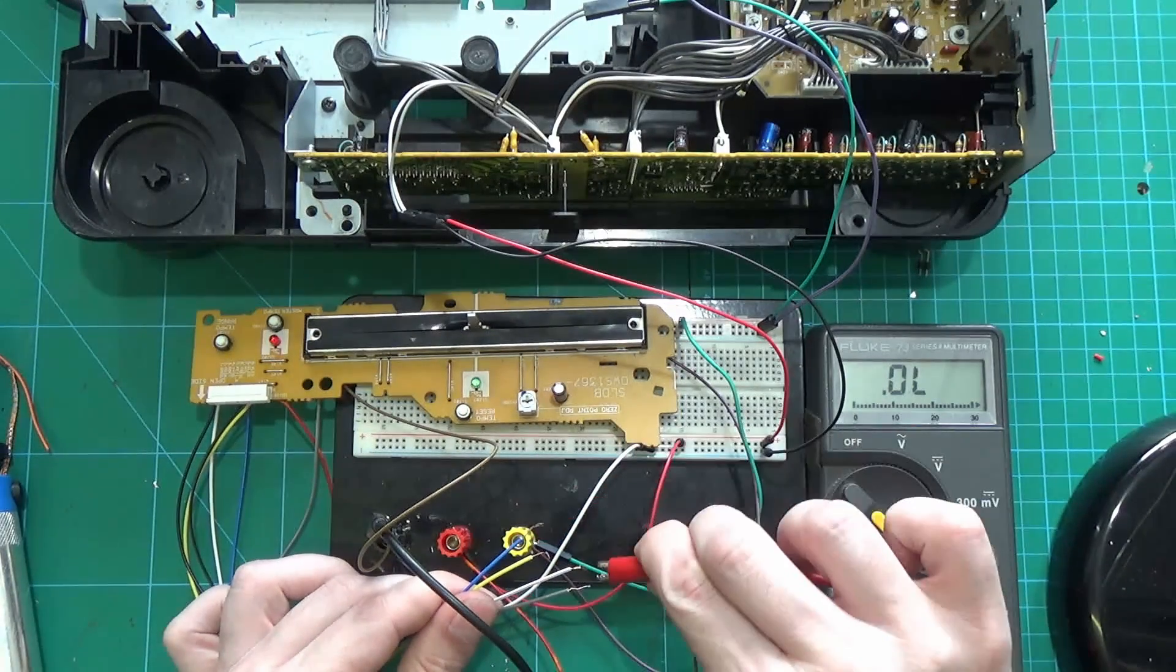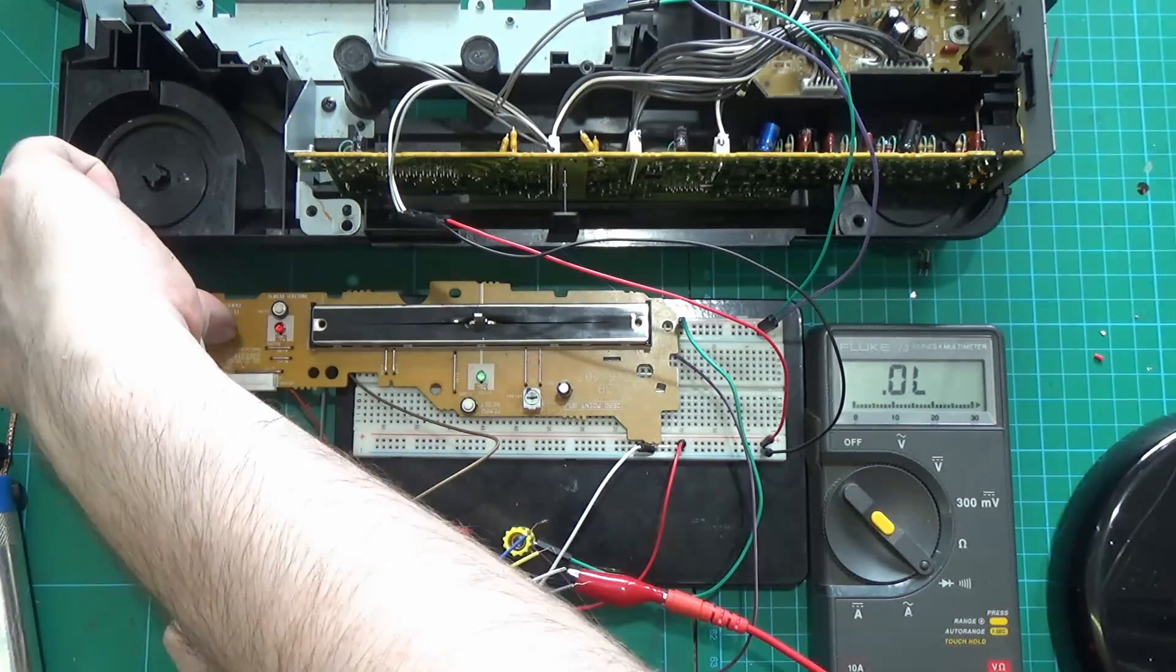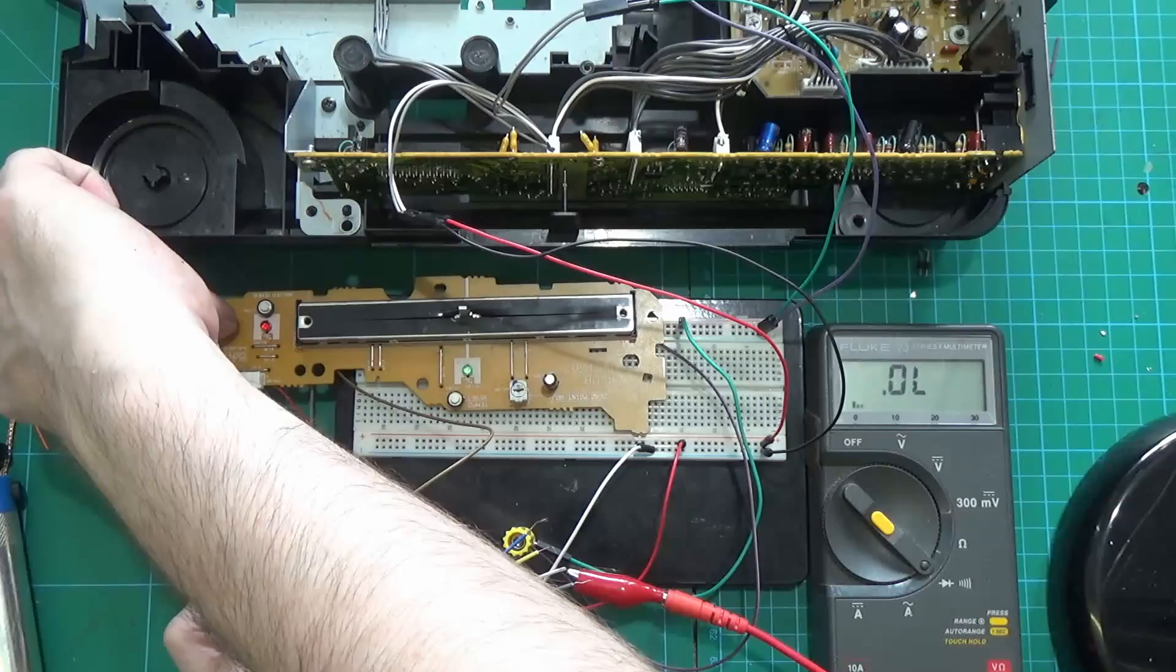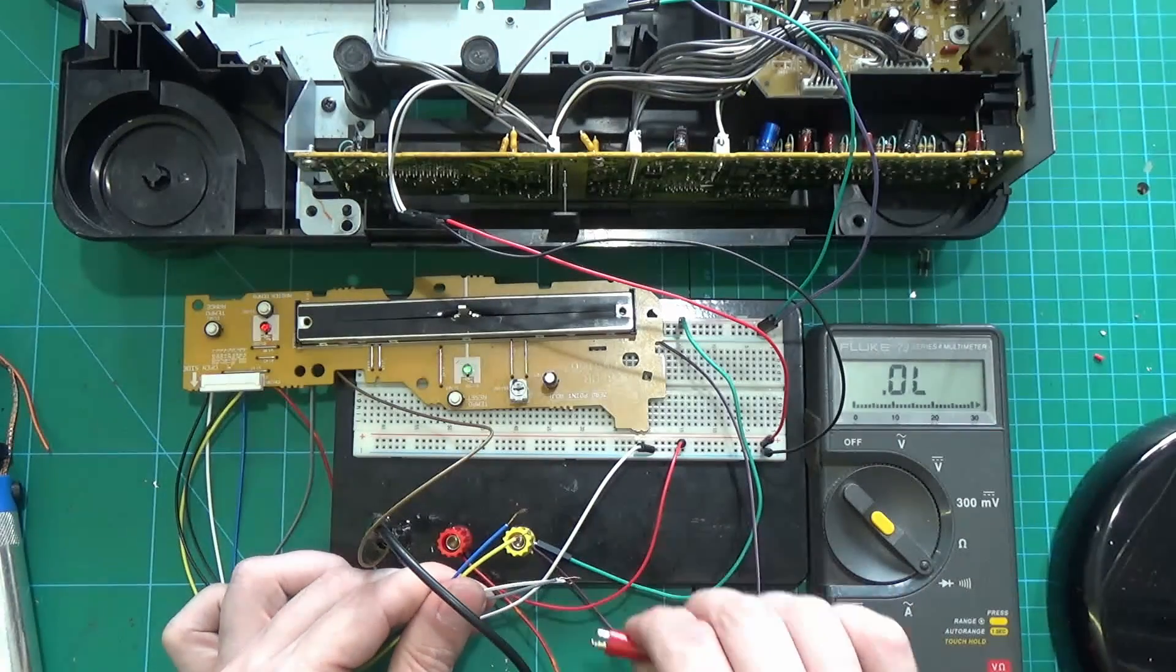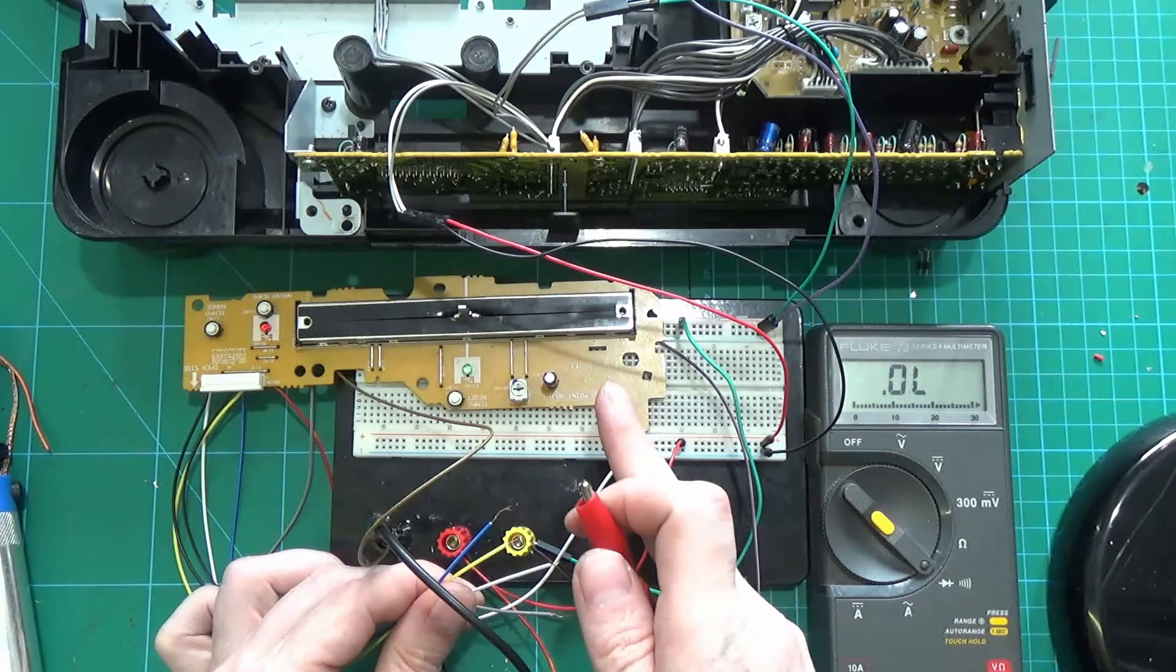And then we use the second white wire for the second button. And then we have the gray wire which is the swipe from the pitch control.